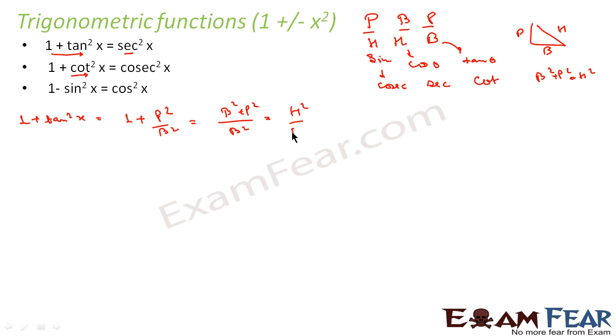So this becomes H²/B². Now H by B is sec theta because B by H is cos theta. So H²/B² becomes sec²x. Thus we have proved this.